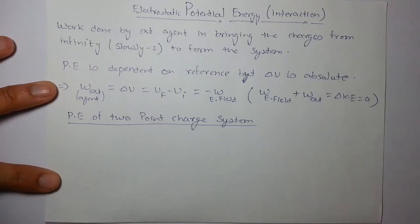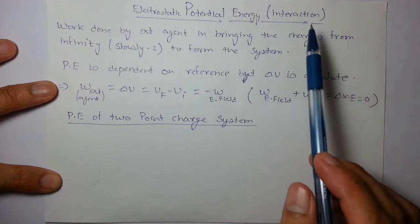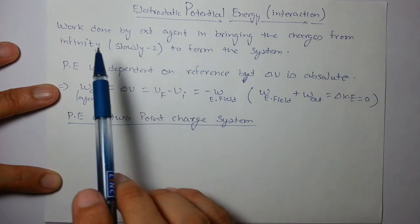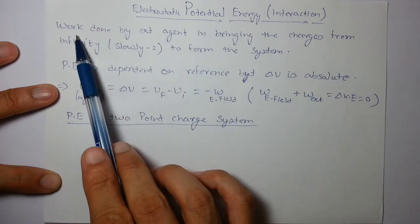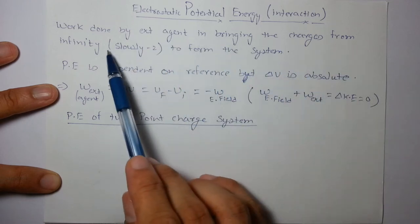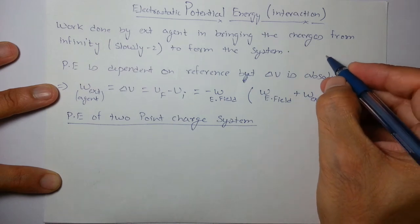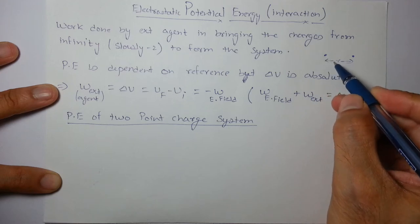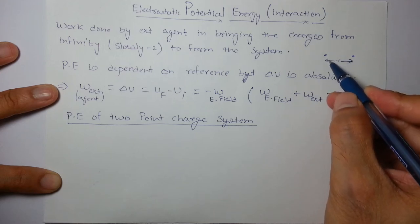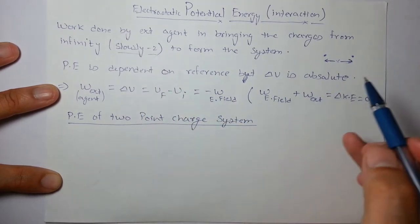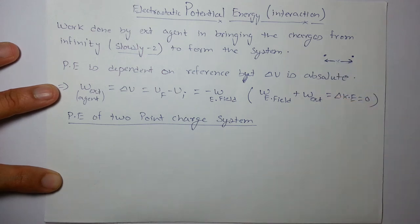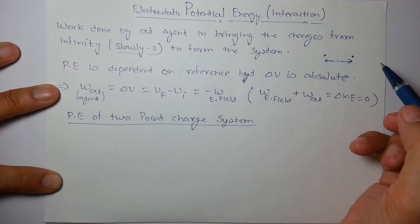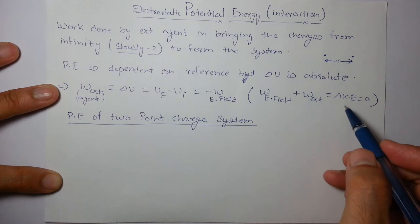In this video we will be studying electrostatic potential energy, which arises because of interaction between charges — so we call it interaction potential energy. Electrostatic potential energy is the work done by an external agent in bringing the charges from infinity to form the system. For example, for a two-charge system formed by bringing charges from infinity to a distance r, the word 'slowly' is important — we bring the charges very slowly so we are not providing any kinetic energy to the charges. Only then can we say that the work done by the external agent will be the change in potential energy.